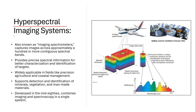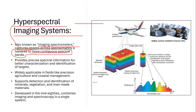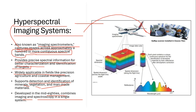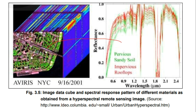Hyperspectral imaging systems, also known as imaging spectrometers, can capture images across a hundred or more contiguous spectral bands. This was even featured in a GATE exam question. They provide precise spectral information for better characterization and identification of targets. Widely applicable in precision agriculture and coastal management, they can detect minerals, vegetation, and man-made materials. Developed in the mid-1980s, they combine imaging and spectroscopy. The satellite Hyperion is used for mapping hyperspectral images.